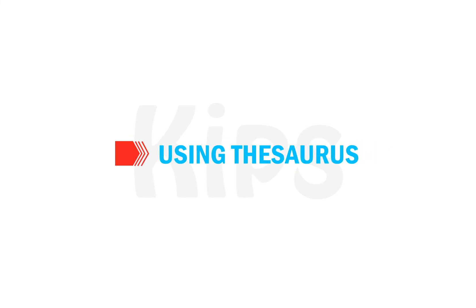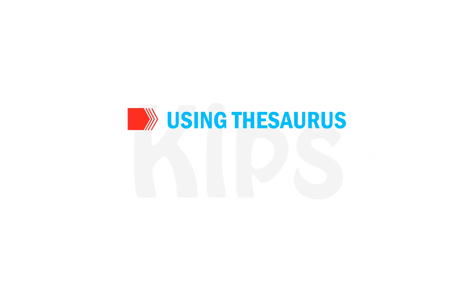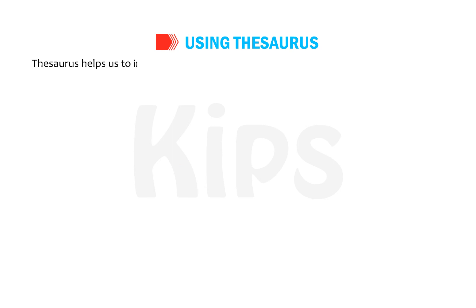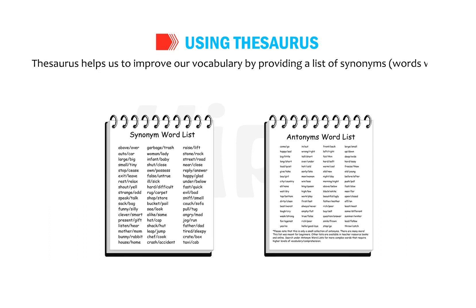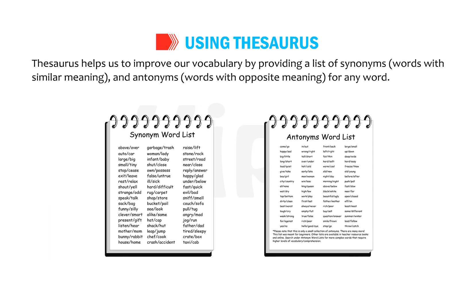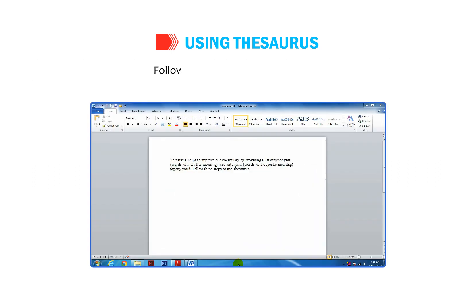Let us understand the use of Thesaurus in MS Word. Thesaurus helps improve vocabulary by providing a list of synonyms — words with similar meaning — and antonyms — words with opposite meaning — for any selected word. Follow these steps to use the Thesaurus.